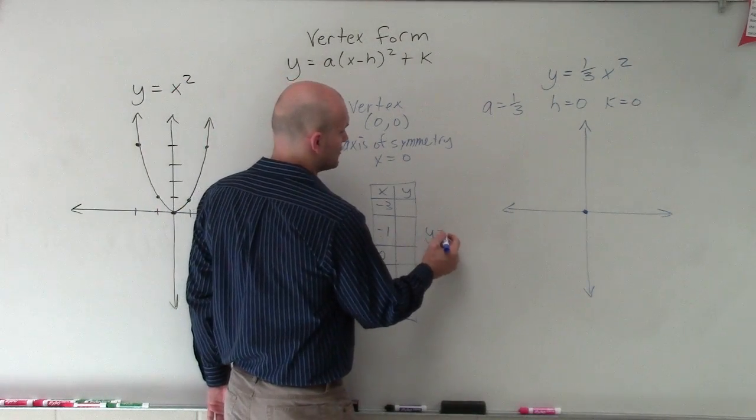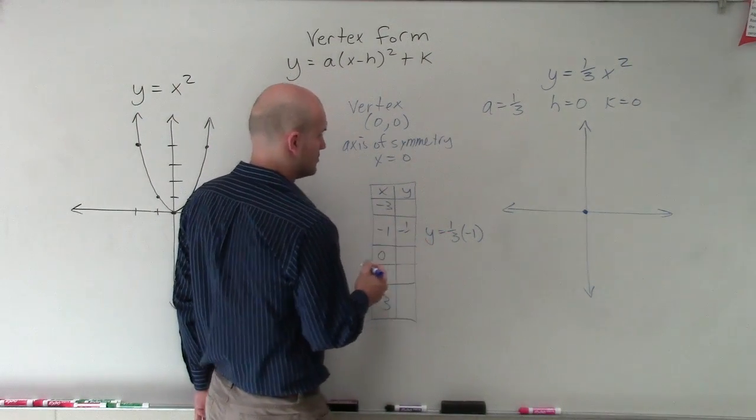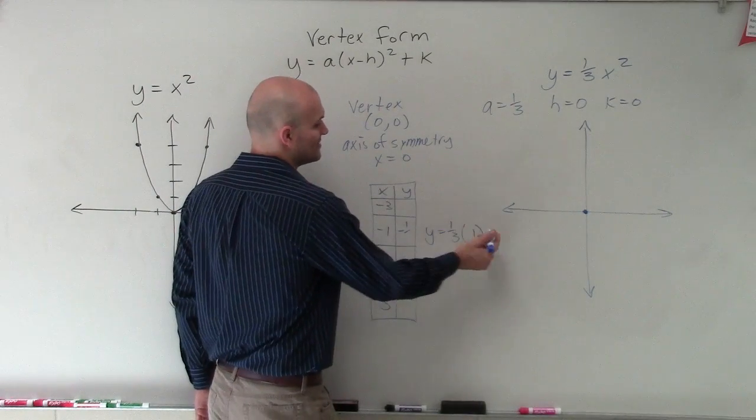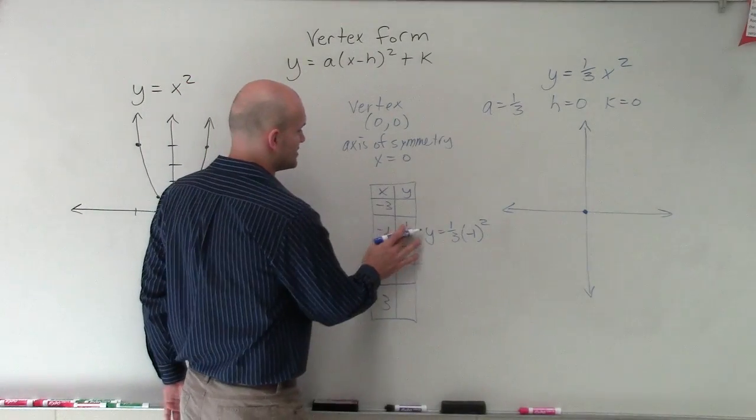So if I do negative 1, that's going to mean y equals 1/3 times negative 1 squared, sorry. Negative 1 squared is positive 1. Positive 1 times 1/3 is 1/3.